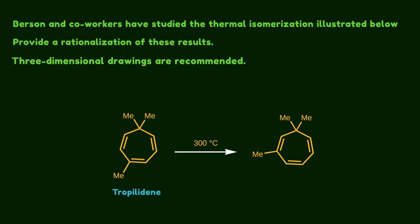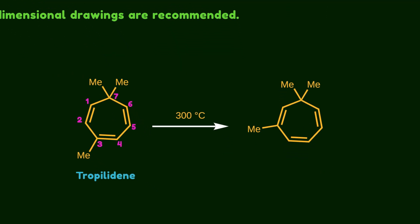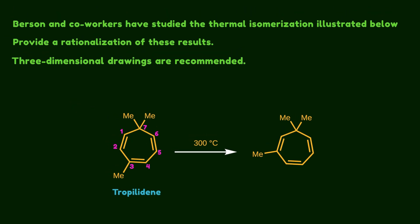Here you see the tropilidin skeleton, which is a 7-membered ring containing 3 alternating double bonds and 1 sp3 carbon atom. Berson and coworkers studied the pyrolysis of the tropilidin skeleton having 2 methyl groups on its 7th position and 1 methyl group on the 3rd position. They wondered how this structure responds to rising temperature.